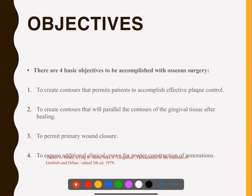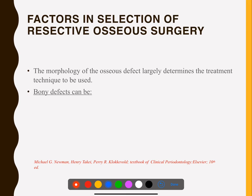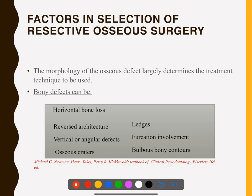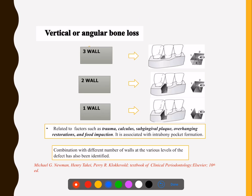These objectives have already been discussed — make a note of all of them. Moving on to factors which affect treatment: bony defects are of various types. They can be horizontal, reversed architecture, vertical, osseous craters, ledges, furcation involvement, and bulbous bony contour.